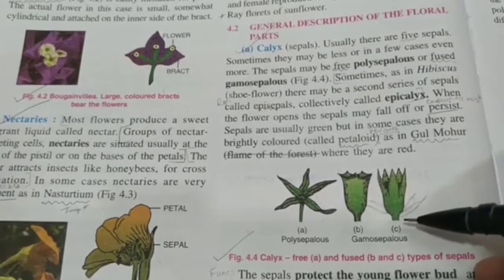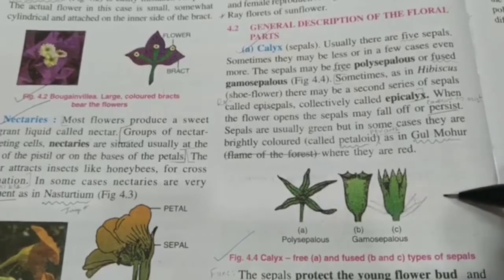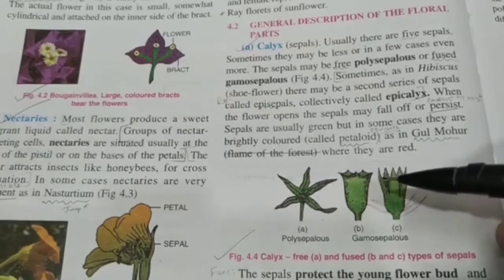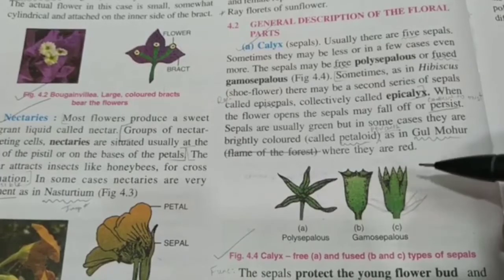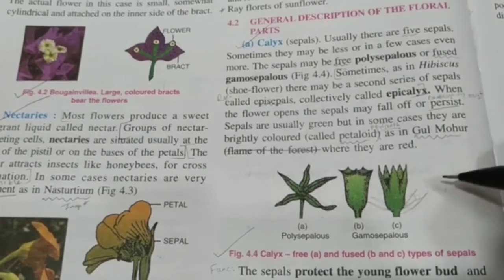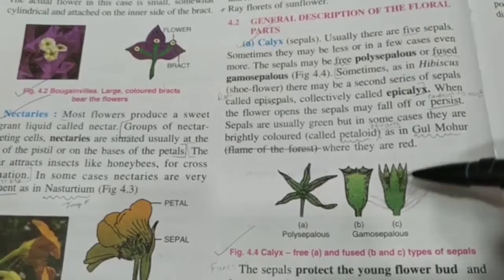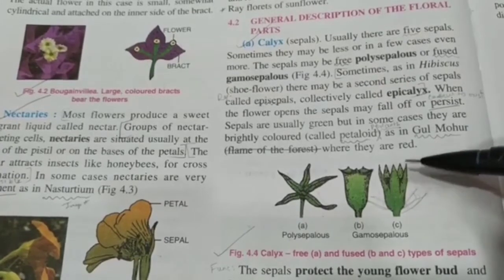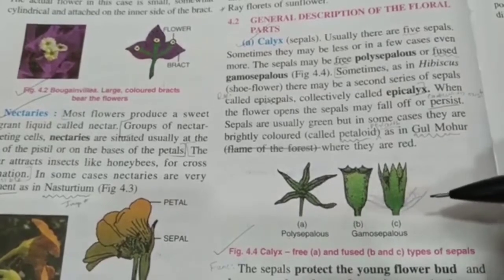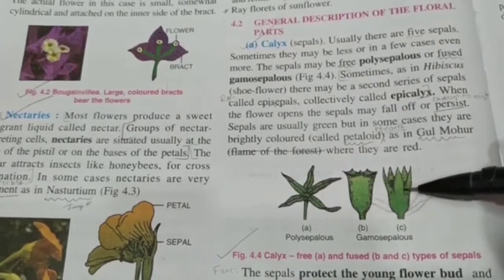When the flower opens, the sepals may fall off or may continue to be present. Sometimes even after fertilization, once the flower has become a fruit, the sepals may still be present — as we can see in fruits like tomato, apple, and guava. Sepals are usually green, but if they are fused with the petals forming a petaloid perianth, they will be colorful and non-green. For example, gulmohar flowers have a red perianth. The function of sepals is to protect the young flower bud before it opens, and since they are green, they also perform photosynthesis, producing food for the flower and the plant.